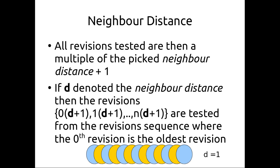The neighbor distance means we test only revisions that are multiples of our neighbor distance plus one, so each tested revision is one neighbor distance away from the next. Blue revisions are ones we test; orange ones are skipped. A neighbor distance of 1 halves our work. A neighbor distance of 2 makes our work a third of the revisions. For distance 3, we've got three revisions between each tested revision and are testing a quarter of the total.